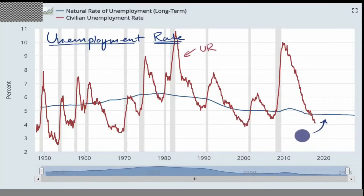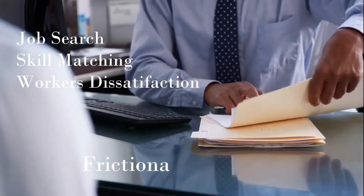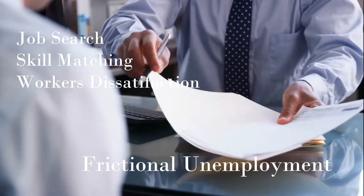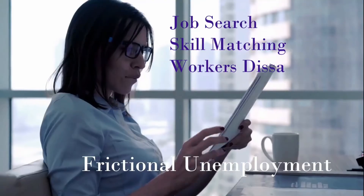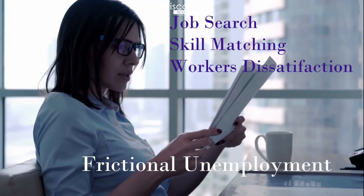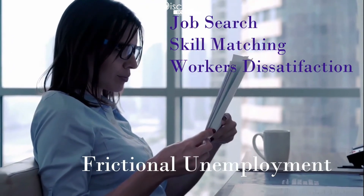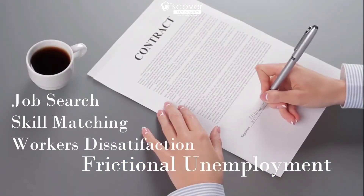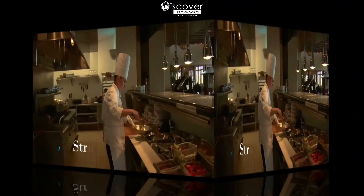There are ups and downs — the red lines show the unemployment rate and the blue line shows the natural rate of unemployment. Frictional unemployment is the portion of unemployment due to the normal working of the labor market, used to denote short-run job-skill mismatching problems. Moving people from one job to another in search of work are the types of frictional unemployment.